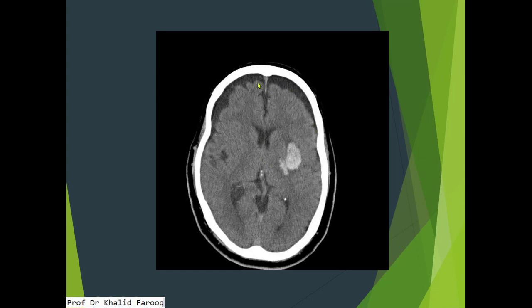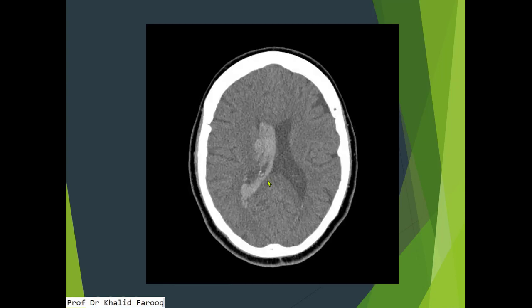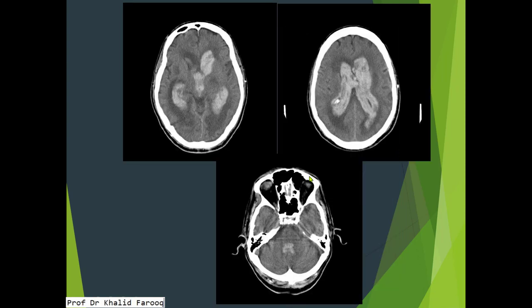Here we see the frontal horn of the lateral ventricle, third ventricle, and subarachnoid CSF space. This is an example of intraventricular hemorrhage — a high density collection is noted within the right lateral ventricle, while the left lateral ventricle is unremarkable and the surrounding brain parenchyma appears normal.